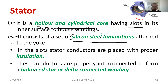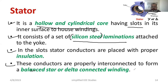We need to provide suitable insulation at the stator — at every slot, insulation must be provided. You can see the slotted stator core with different slots and the stator winding. The winding can be connected in either star or delta connection depending on the requirement, and the conductors are properly interconnected in a balanced star or delta configuration.